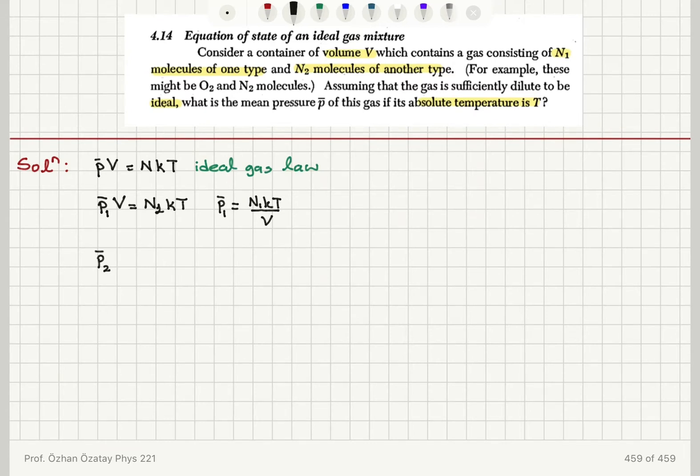For the second type of gas, I can write the ideal gas law, P̄₂V = N₂kT. And the mean pressure exerted by the second type of gas will be the partial pressure P̄₂ = N₂kT/V.